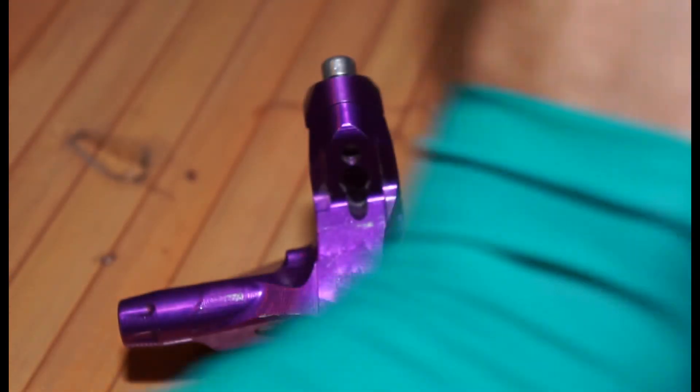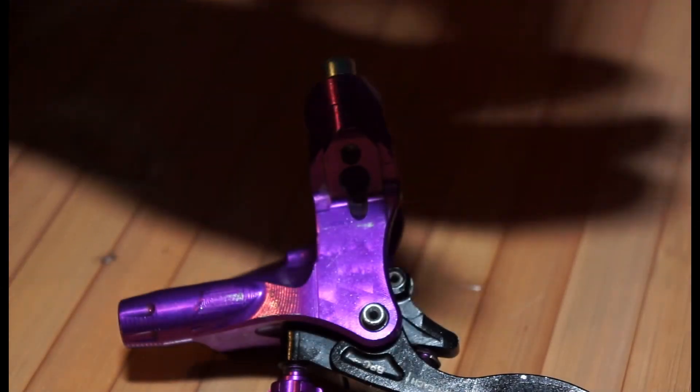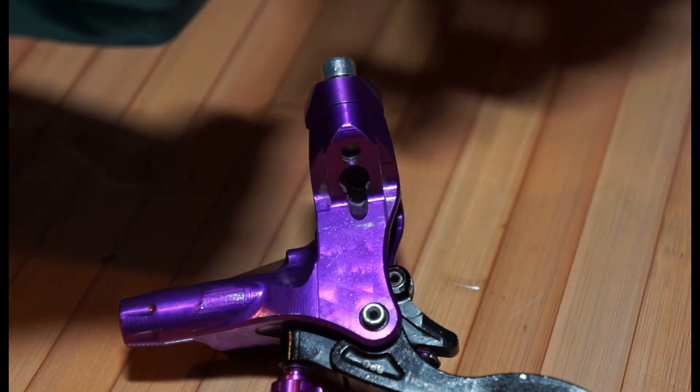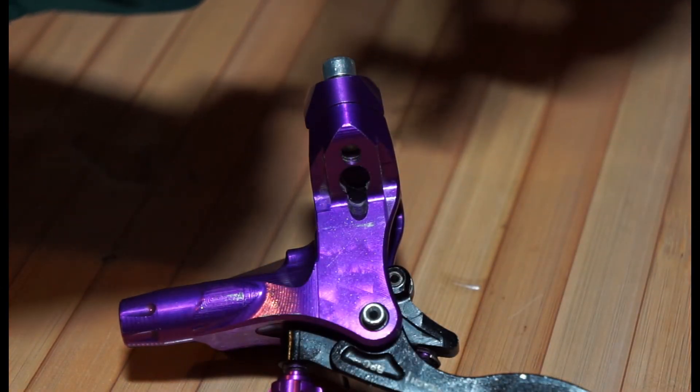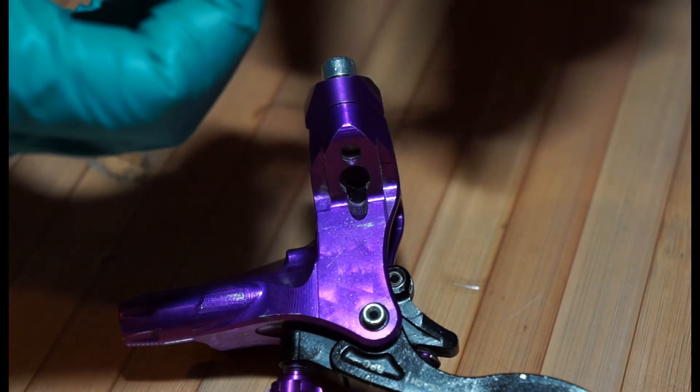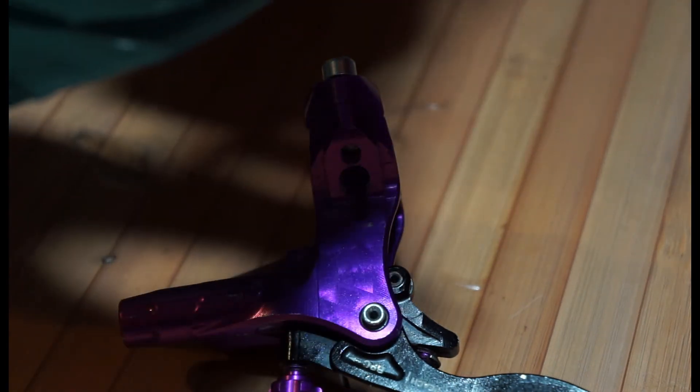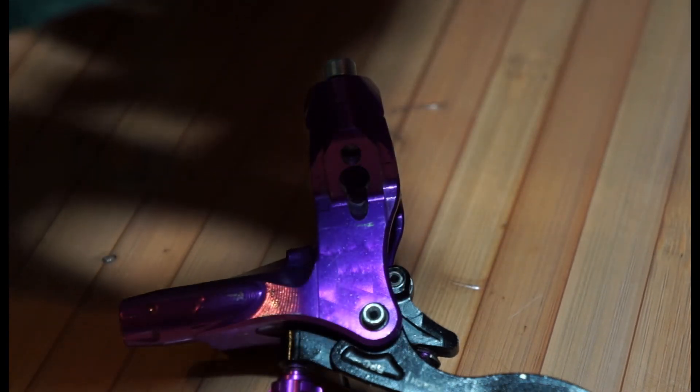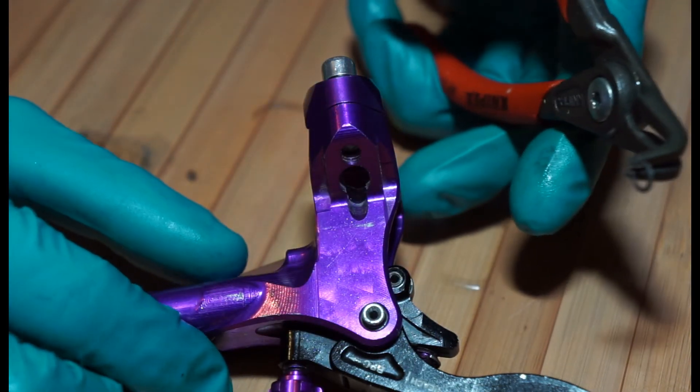Turn your lever upside down. Get your circlip pliers. Whatever tool you're going to use. I would recommend the circlip pliers. You might be able to find a cheaper set. But it has to be around the three millimeter. Anything under three millimeter would be okay.